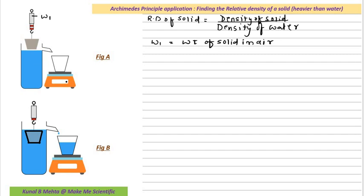This is our spring balance and I have attached this solid, which is heavier than water, to the spring balance. The spring balance is giving me the reading W1. W1 is the weight of the solid in air. This is an empty vessel placed on a digital weighing balance. Suppose the volume of this solid is capital V and the density of the solid is rho_s. The water filled inside has density sigma. Since rho_s is denser than sigma, the solid is going to submerge inside.